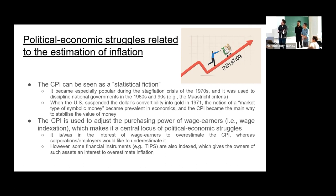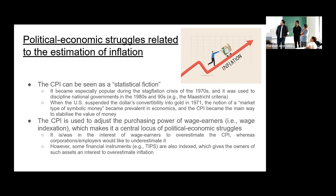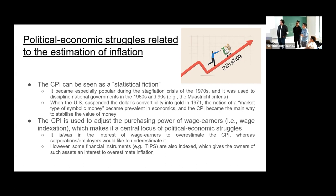The CPI is a key issue because it is used to adjust the purchasing power of wage earners and others who receive social security payments — more so in the past, but still relevant today. This makes it a central locus of political-economic struggles. Wage earners have an interest in estimating inflation higher, while employers and similar actors have an interest in estimating it lower. Some financial instruments like TIPS — Treasury Inflation-Protected Securities — may also create incentives to overestimate inflation.